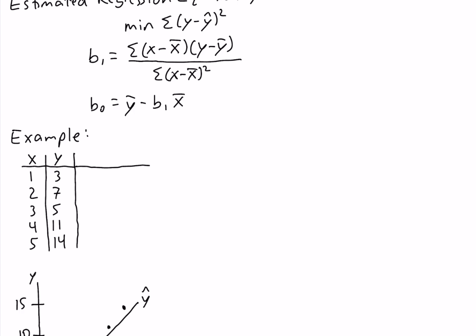Our first column is going to be x minus x-bar. x-bar is equal to 3. So: 1 minus 3 is negative 2, 2 minus 3 is negative 1, 3 minus 3 is 0, 4 minus 3 is 1, and 5 minus 3 is 2. This column represents the deviations about the mean and should sum to 0, and we see that it does.